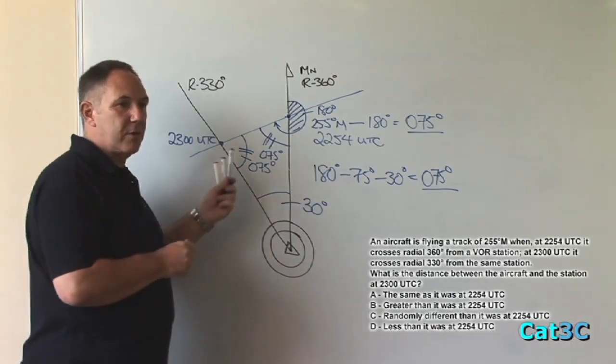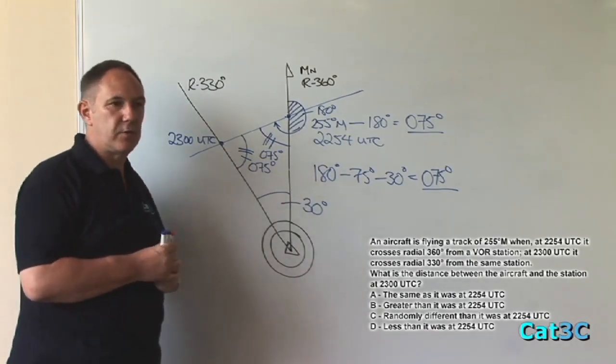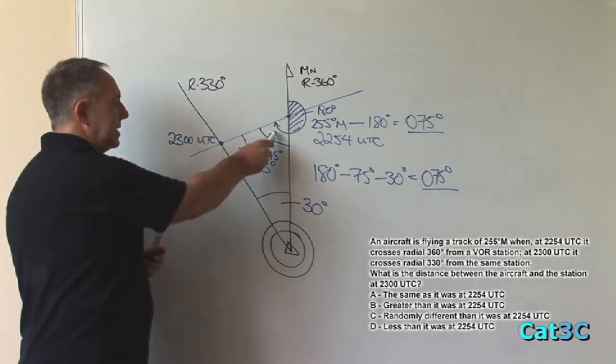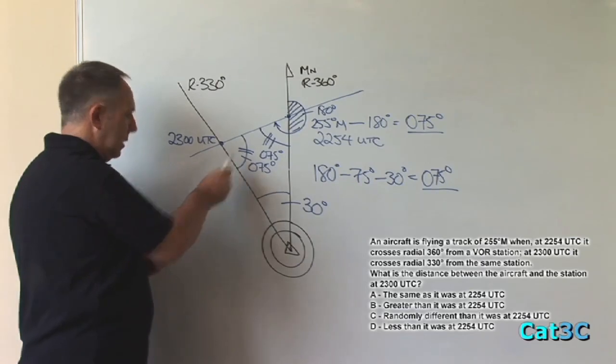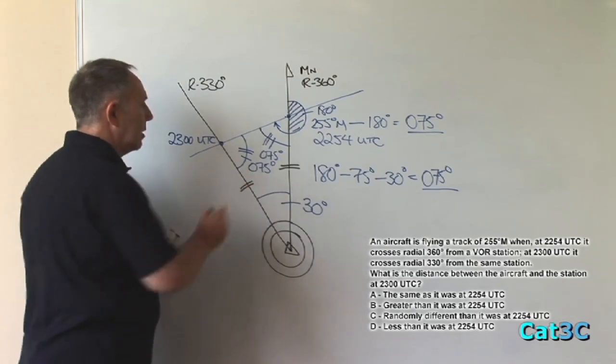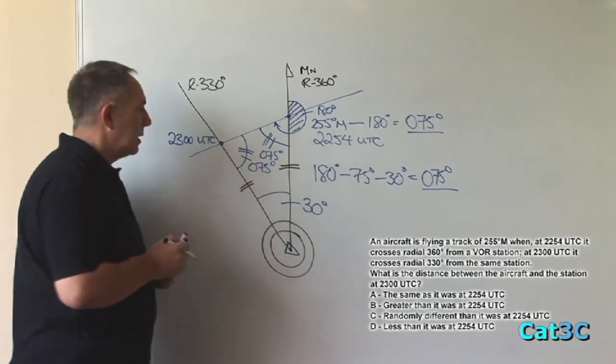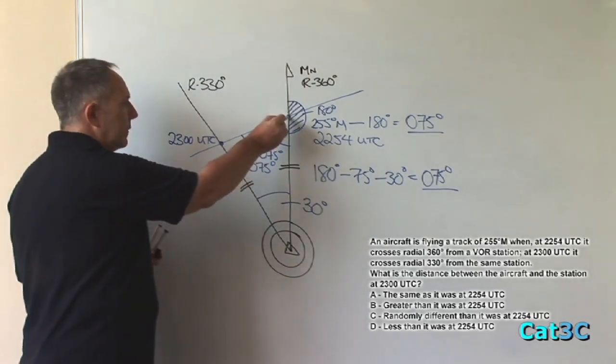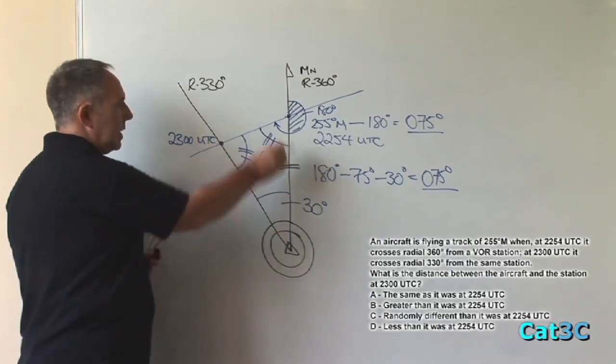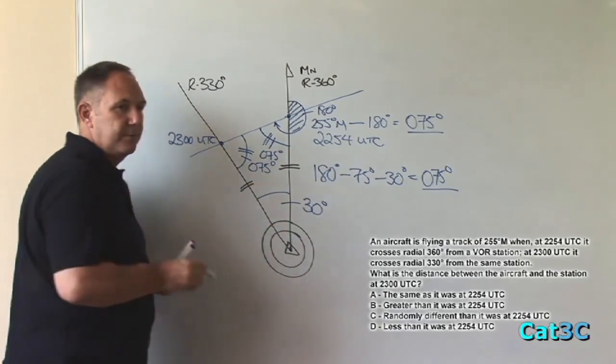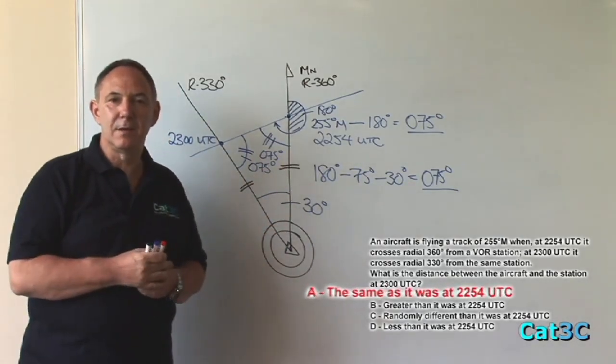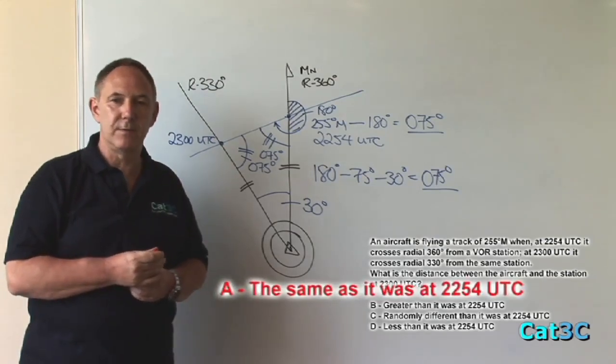This means that this triangle is what we call an isosceles triangle. The properties of an isosceles triangle are such that it has two angles of equal value, but importantly to this question, the two adjacent sides are also of equal value, meaning that the distance from the VOR at 2300 UTC was the same as it was at 2254 UTC. So the answer we're looking for is A, the same as it was at 2254 UTC.